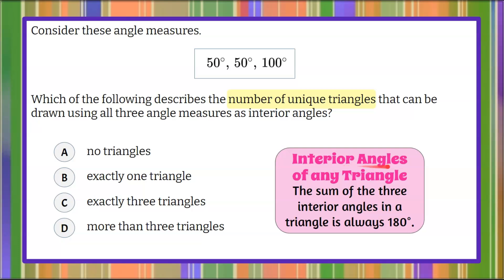We know that the interior angles of any triangle have the interior angle sum theorem. The sum of the three interior angles in a triangle is always 180 degrees. So if you add all three of these up, and they don't equal 180 degrees, then you will not have a triangle.